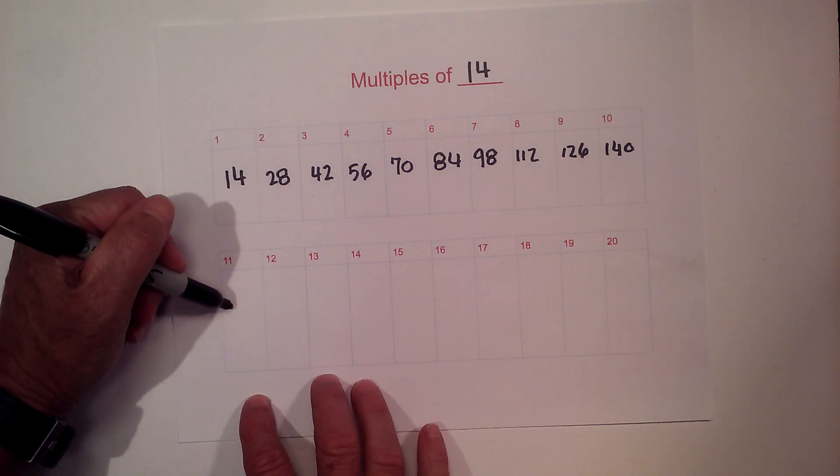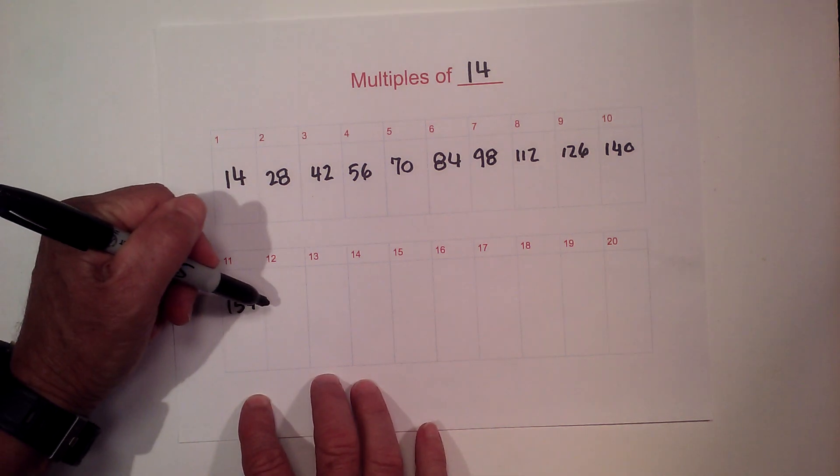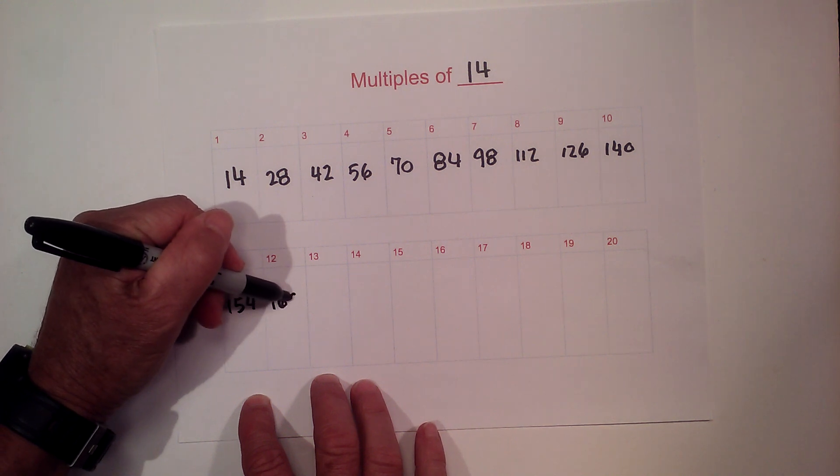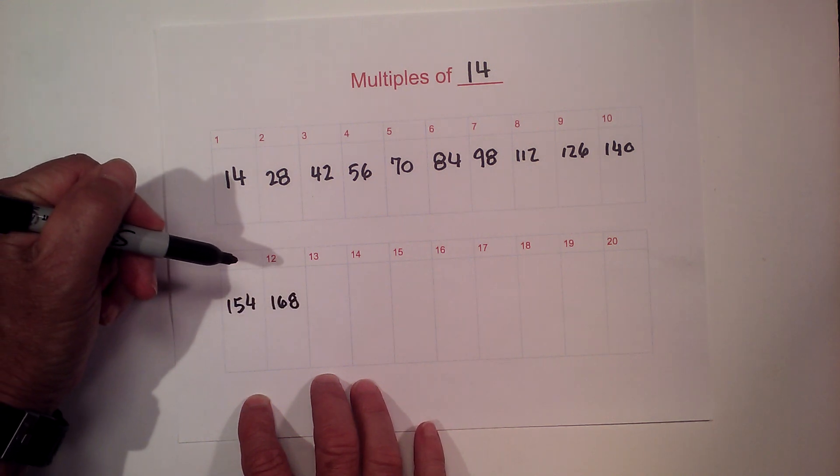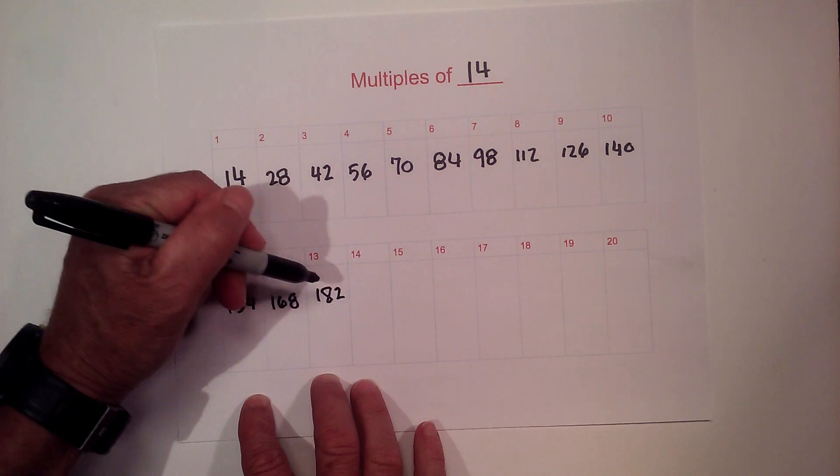Now let's begin with 11. It is 154, 168, 14 times 13 is 182.